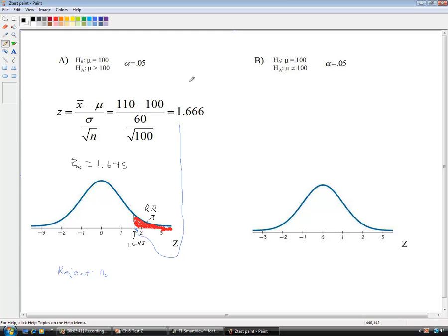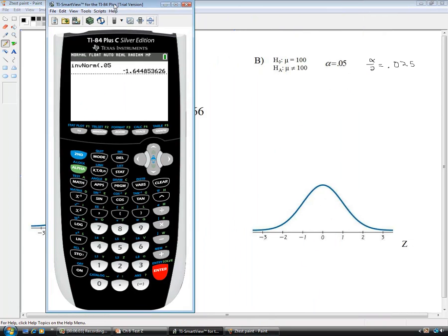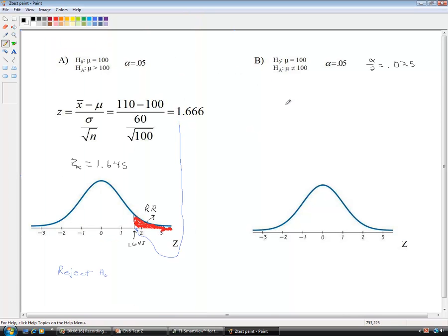Alright. Now, part B is a two-tailed test. So, much like the confidence intervals, we're going to take α, cut it in half. So α over 2 is 0.025. So now we're going to take the inverse normal 0.025 and find each of the critical values. There will be two. There we go. So negative 1.96 and positive 1.96 are the values we'll need.